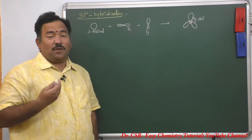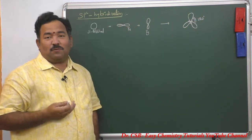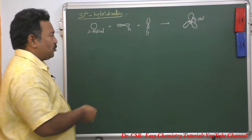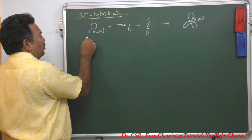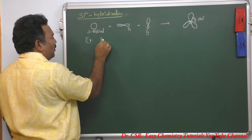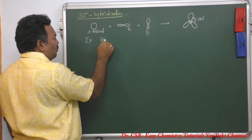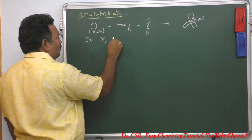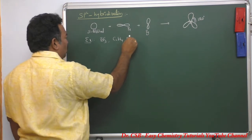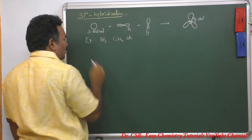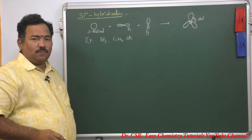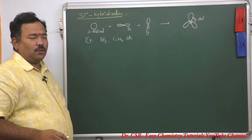There are many examples for sp2 hybridization. Let me take two: example one is BF3, the boron trifluoride molecule, and another is C2H4, the ethylene molecule. Let me explain the BF3 molecule.